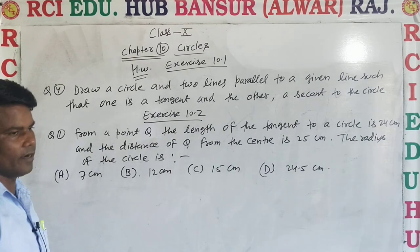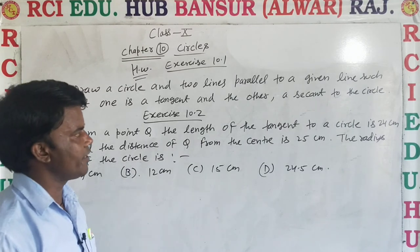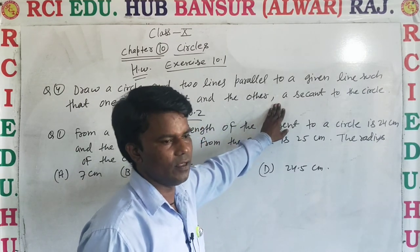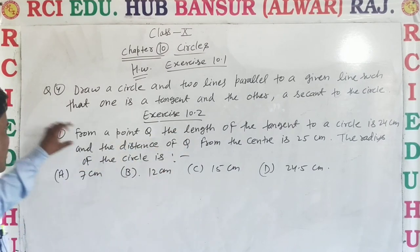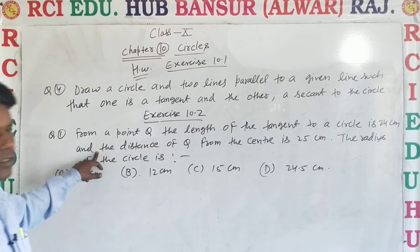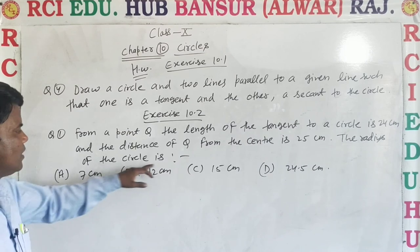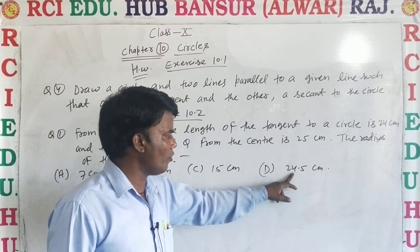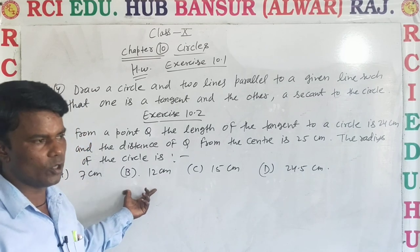Next is exercise 10.1, question number 4: draw a circle and two lines parallel to a given line such that one is a tangent and the other is a secant to the circle. From a point Q, the length of the tangent to a circle is 24 cm and the distance of Q from the center is 25 cm. Find the radius. Options: A: 7 cm, B: 12 cm, C: 15 cm, D: 24.5 cm. Use Pythagoras theorem. Thank you.